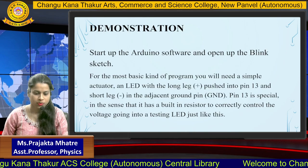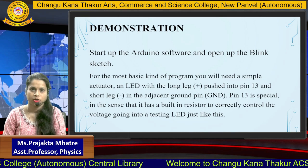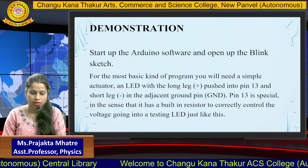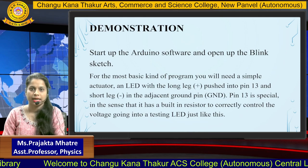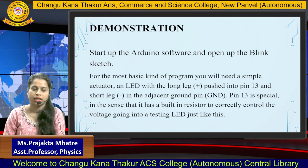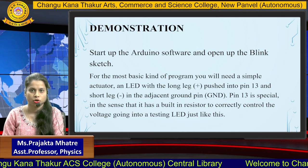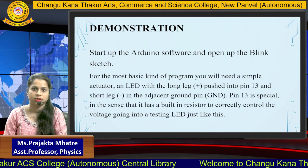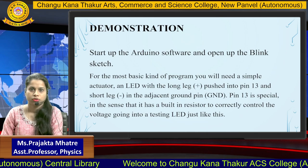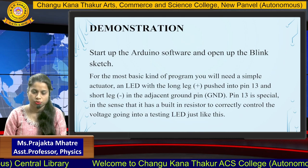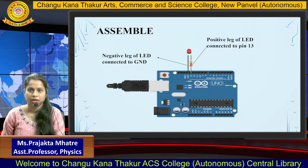We will start from the Arduino software and build a program to blink an LED. For this most basic kind of program, you need a simple actuator — an LED with a long leg and a short leg. The long leg is the positive terminal and the short leg is the negative terminal. The positive leg is connected to pin number 13 and the negative leg is connected to ground.